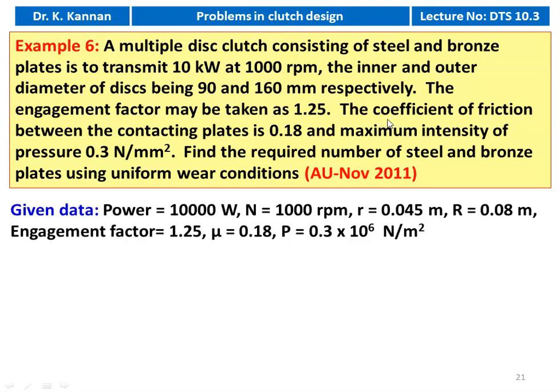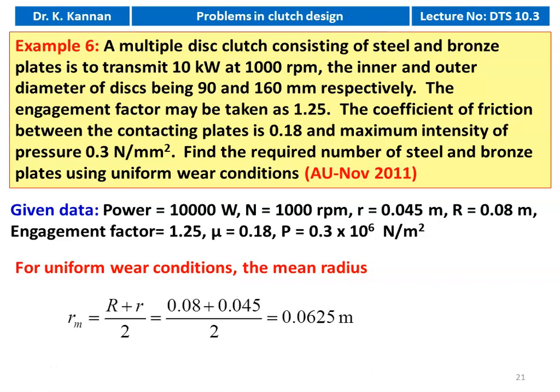We write down the given data: Power is 10,000 watts, speed equal to 1000 rpm. The inner radius small r is 0.045 meter, outer radius capital R is 0.08 meter. Engagement factor is 1.25, coefficient of friction is 0.18, and the intensity of pressure is 0.3 into 10 power 6 N per meter square. For uniform wear conditions, the mean radius Rm equals capital R plus small r divided by 2, so 0.08 plus 0.045 divided by 2 equals 0.0625 meter.